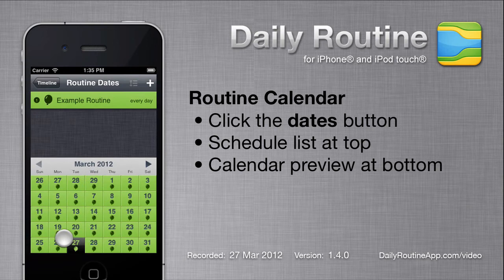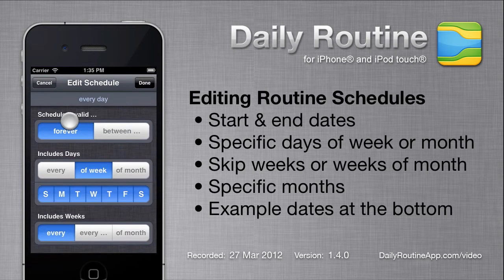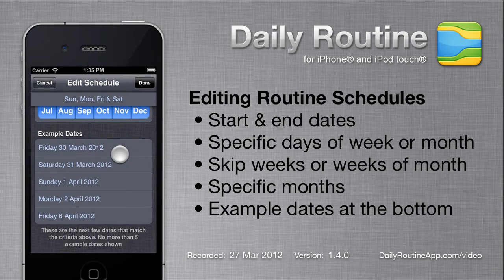By default, the example routine is scheduled for every day. To change your routine schedule, tap the routine in the top list, then tap the dates button. Here we can specify which days, weeks, and months the schedule applies to. The schedule description at the top changes as we're editing. At the bottom, we can see the next five dates that our schedule will cover.